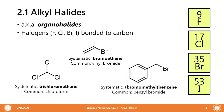We first start with alkyl halides. Alkyl halides are carbons connected to a halogen. These halogens are primarily fluorine, chlorine, bromine, and iodine — the commonly observed halogens in organic chemistry. Here are some examples: trichloromethane, which has three chlorine atoms; bromoethane with a bromine atom; and bromomethylbenzene, which has bromine as well.